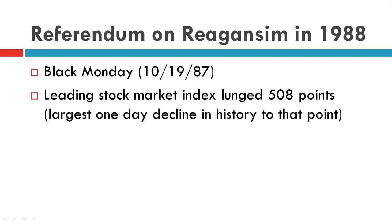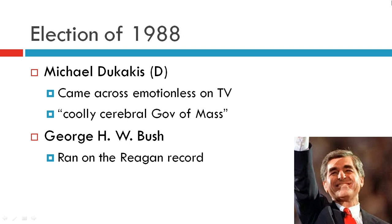Black Monday, October 19, 1987: the stock market dropped 508 points, which was the largest one-day decline in history.